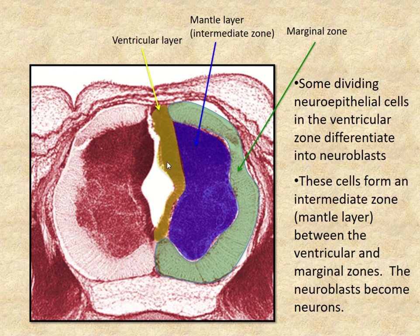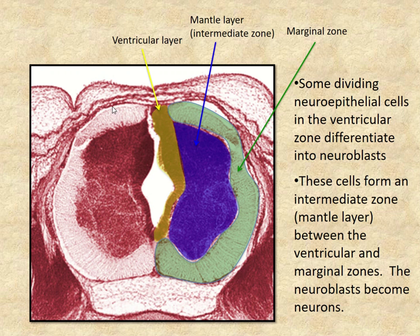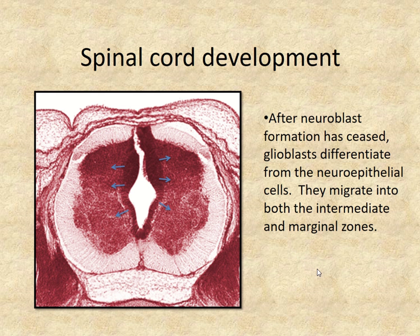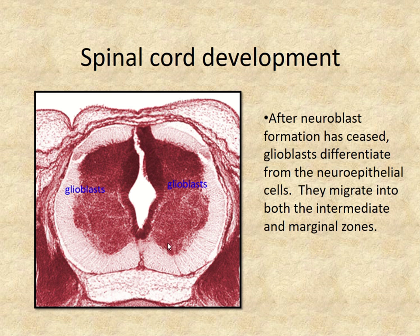Here's what it looks like for real in an embryo. The ventricular layer is highlighted in yellow and lines the central canal. The intermediate layer, also called the mantle layer, is a dark area because it's a whole bunch of neuroblasts and neurons developing. The marginal zone, the most peripheral zone, is much lighter in color because it doesn't have cell bodies of neurons — it just has axons. After the neuroblasts are formed and developing into neurons, glioblasts come from the neuroepithelium and migrate out into the other zones — that's how the macroglia get there, going into both the intermediate and marginal zones.